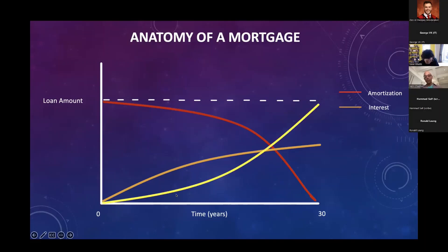The other part of your payment is going to be principal. In the early years of the mortgage, let's say you're paying $4,000 a month — much more of it is going to be interest and a lot less will be principal. There will be a point in time where these lines cross, and eventually you're going to be paying more principal than interest.